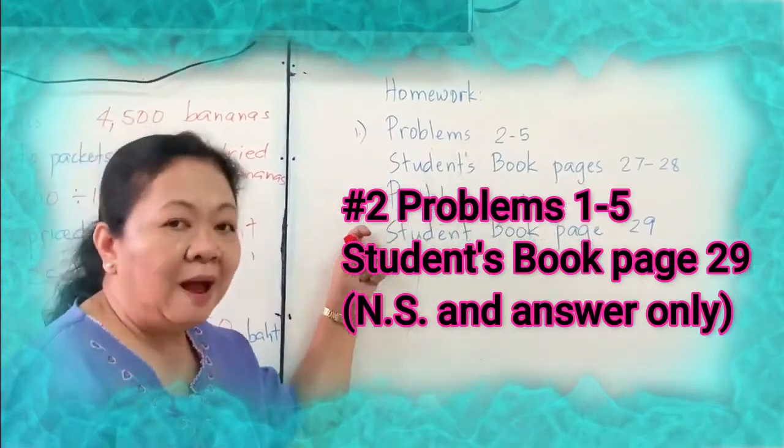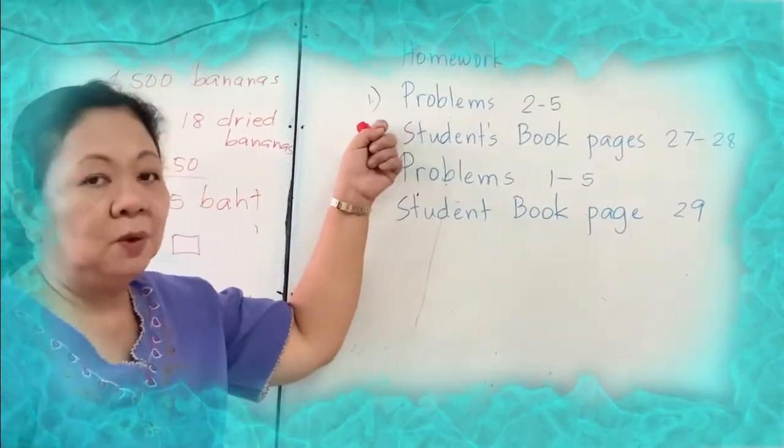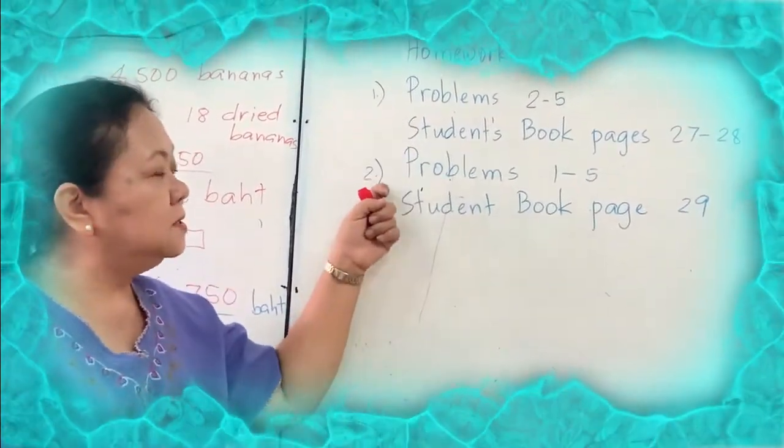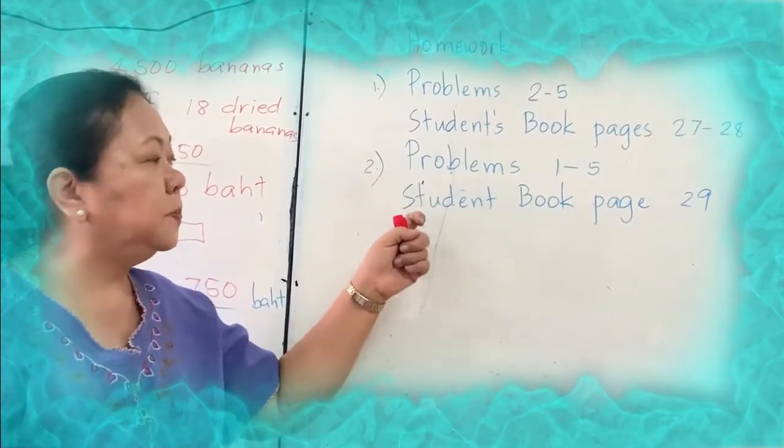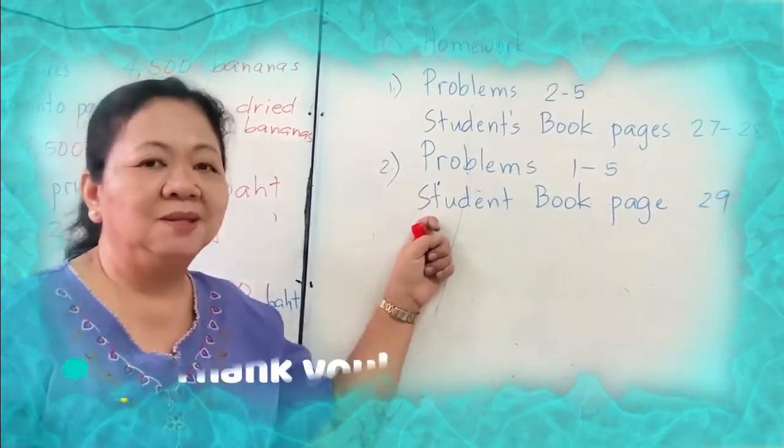And this, number 2, you will only write the number sentence and the answer. This one, you will show the working. So number sentence and answer problems 1 to 5, student's book page 29. That's all. Thank you.